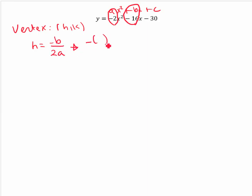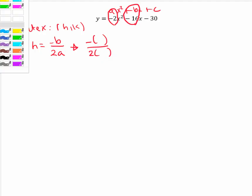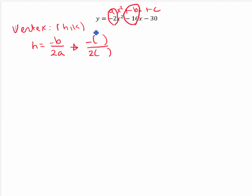So we have negative whatever our b value is over 2 times whatever our a value is. We see from our original equation that b is negative 16 and a is negative 2. So this negative negative makes that a positive 16 on top. 2 times negative 2 is a negative 4. And then we see that that is negative 4. 16 over negative 4 is negative 4.